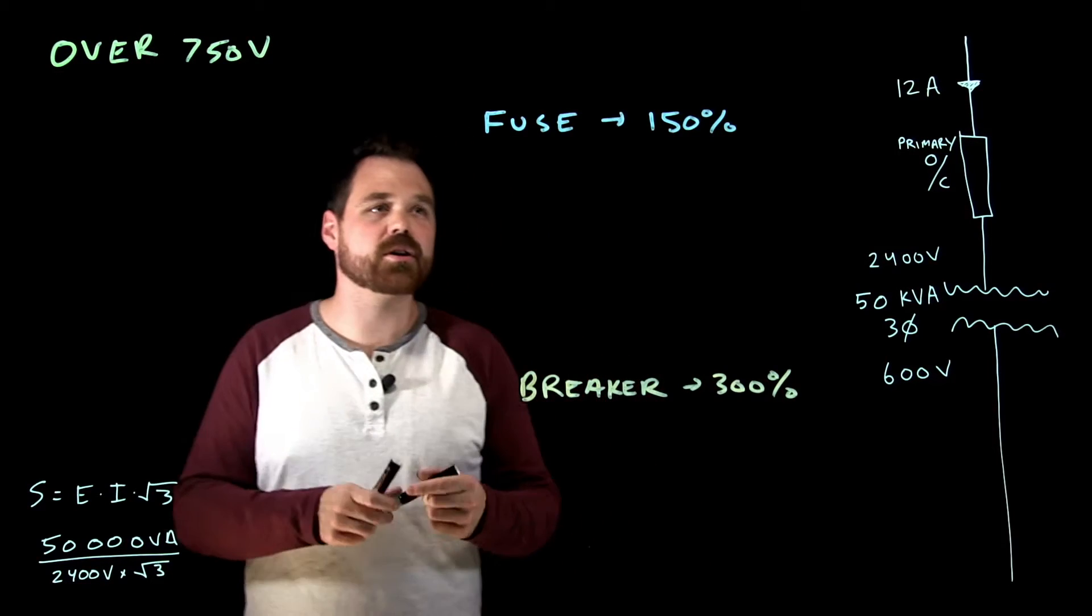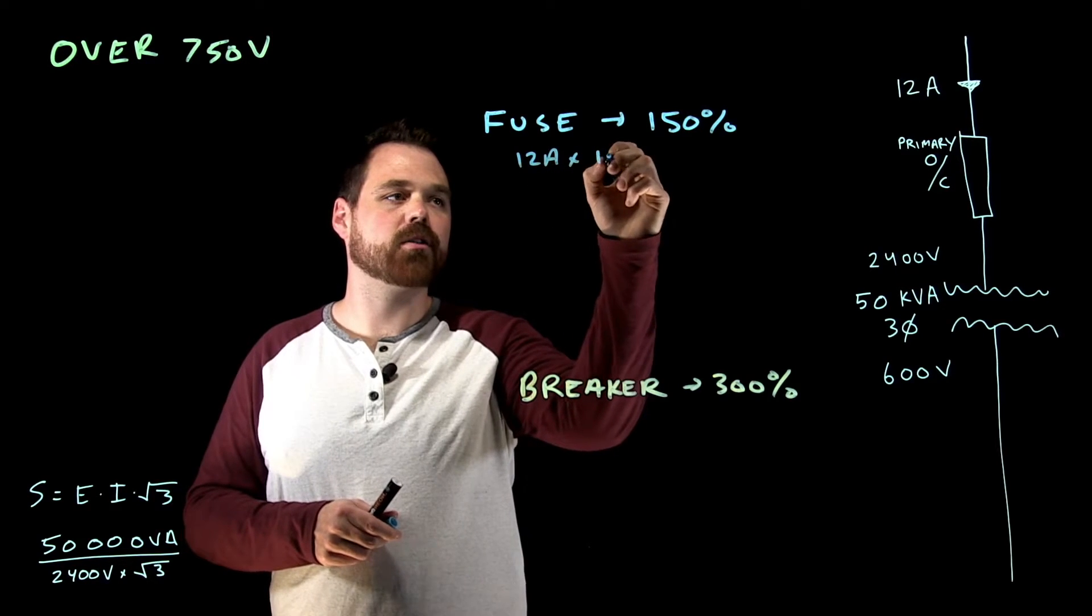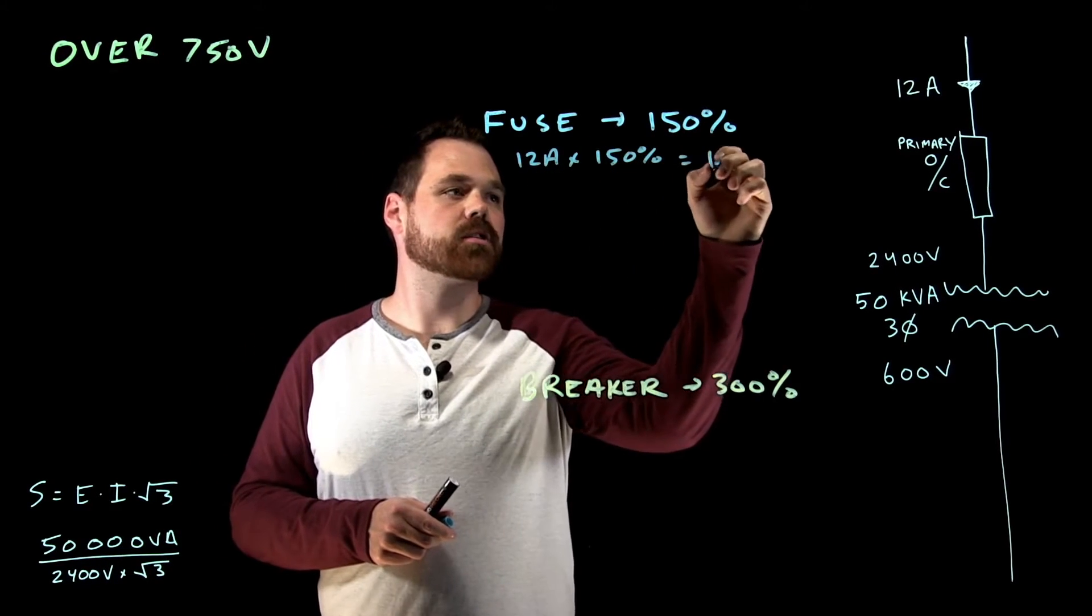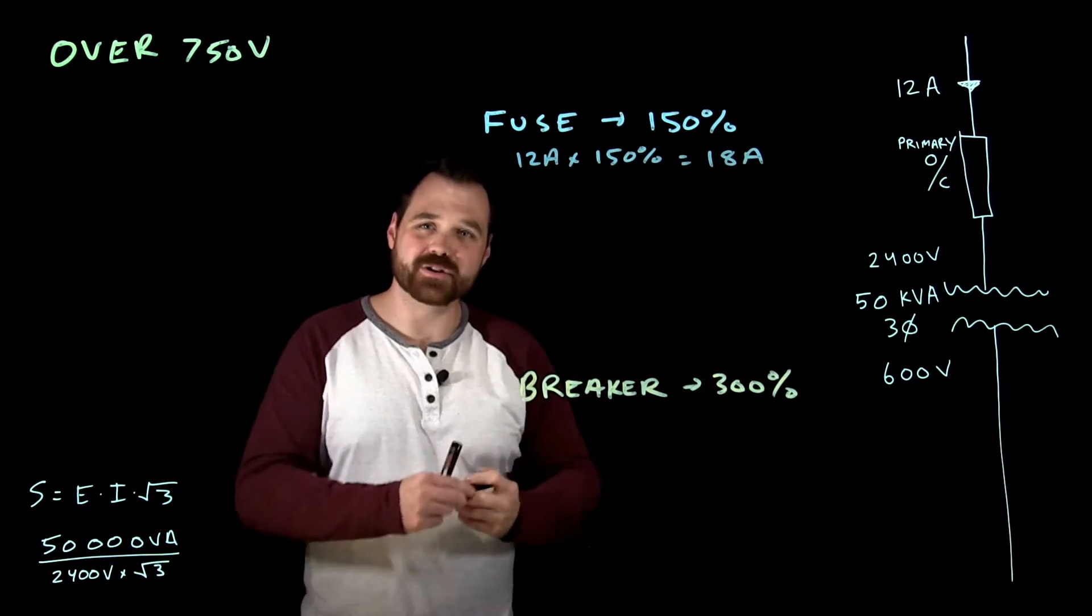So my fuse, I'm going to take 12 amps times 150% which gives me 18 amps. Now there's a trick here.